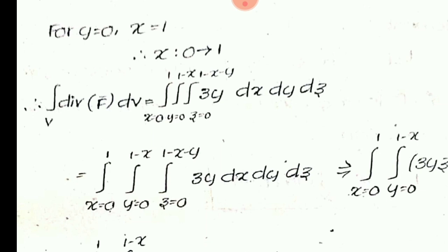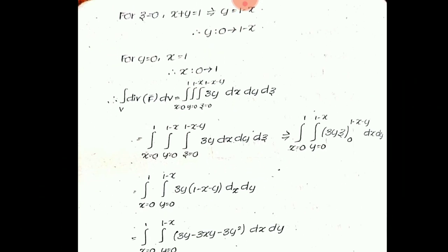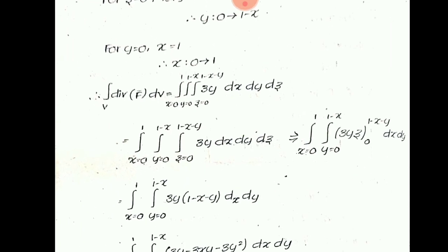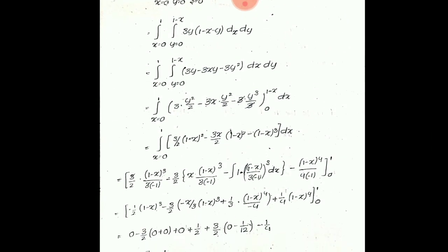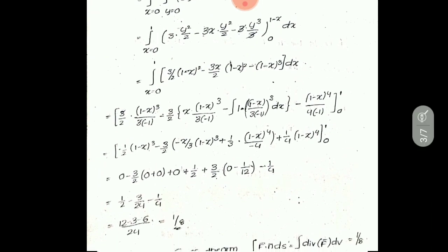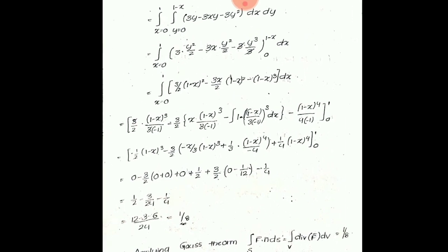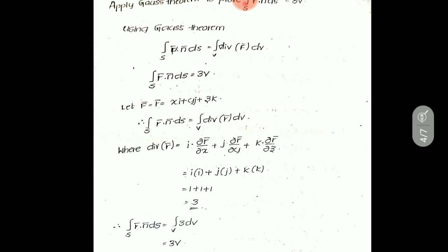Now calculate the right-side integral: integral over V of divergence of F̄ dV. Write down the X, Y, Z limits and divergence of F̄ = 3Y; dV stands for dX dY dZ. Start with Z integration, substitute limits, then Y integration, then X integration. After simplification, the final answer is 1/8. By Gauss theorem, the left-side integral equals the right-side integral, which equals 1/8.